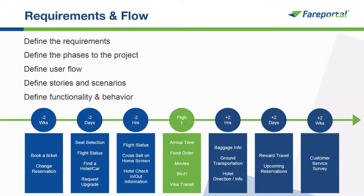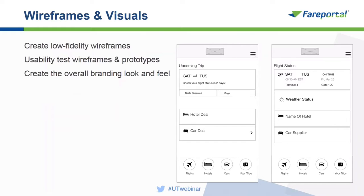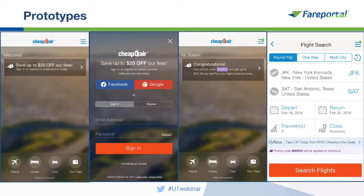We created wireframes first as low fidelity to nail down the interaction design, then did user testing on those wireframes or high fidelity prototypes depending on the project. After all the groundwork is done we create the visuals and put them together into InVision — a tool we use to create an interactive prototype — so you can actually feel how it works on your phone, as close to the real experience as possible.